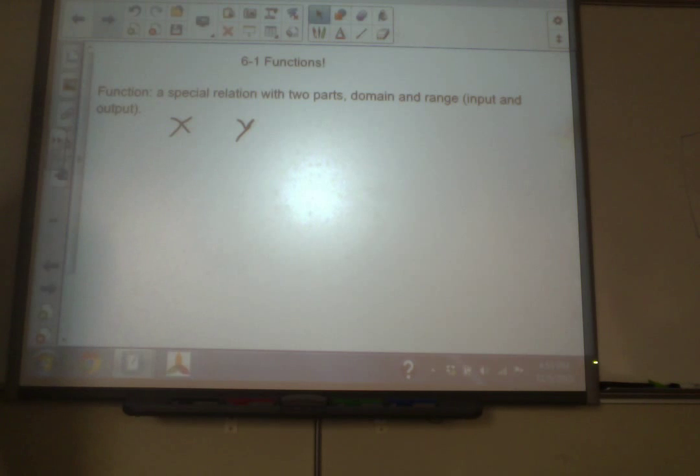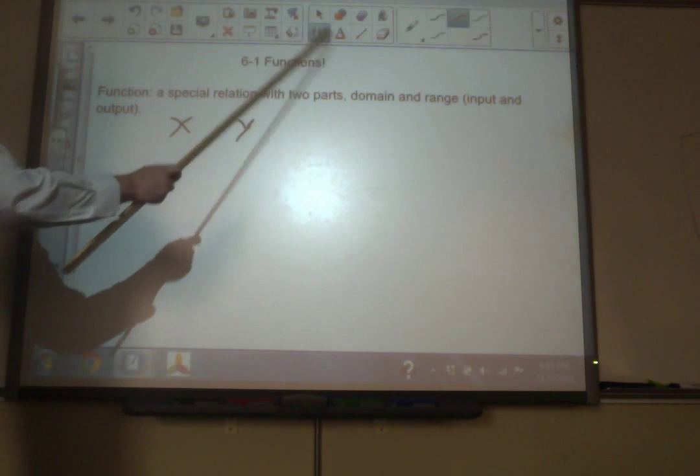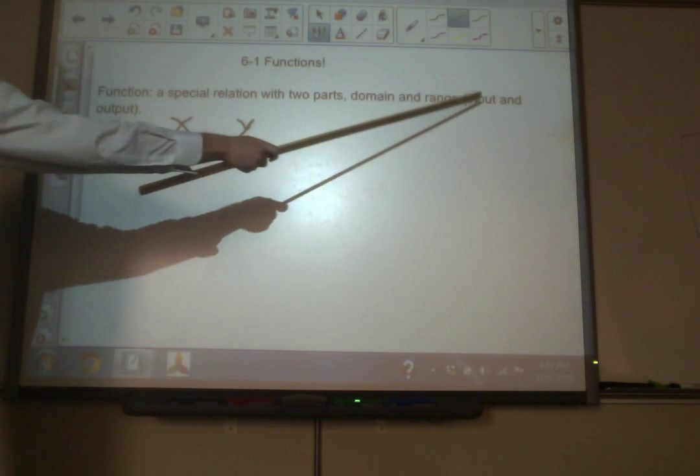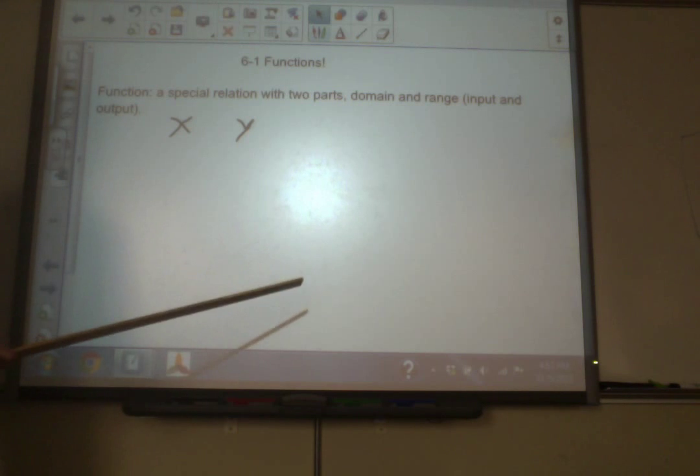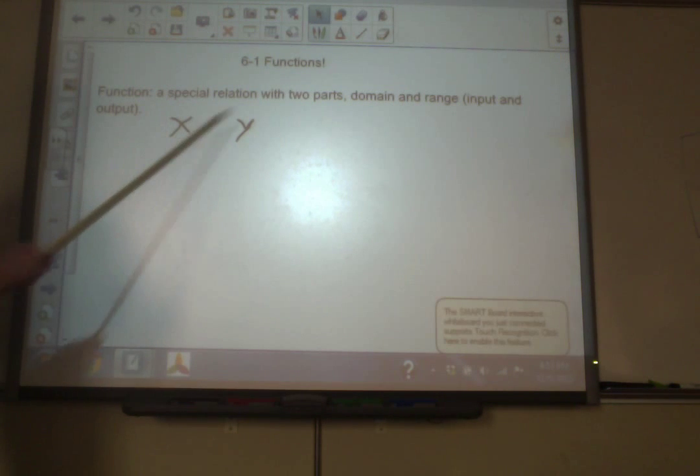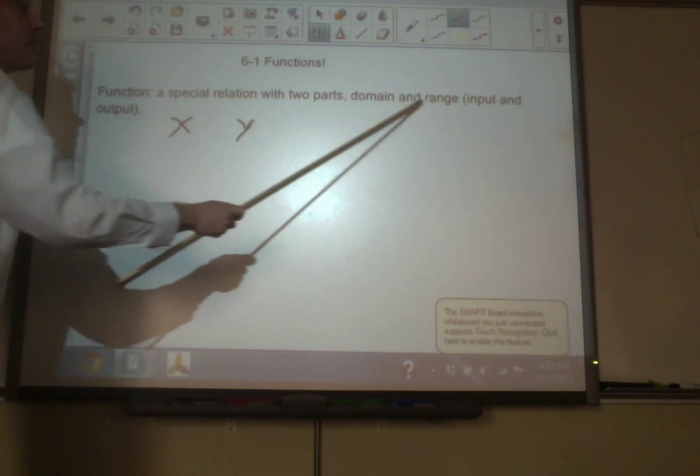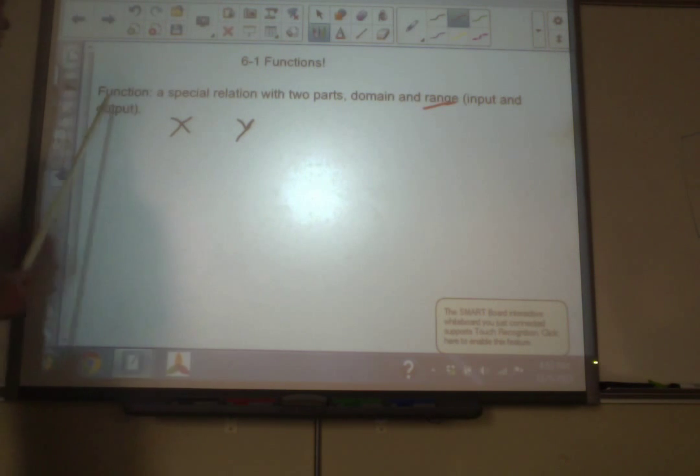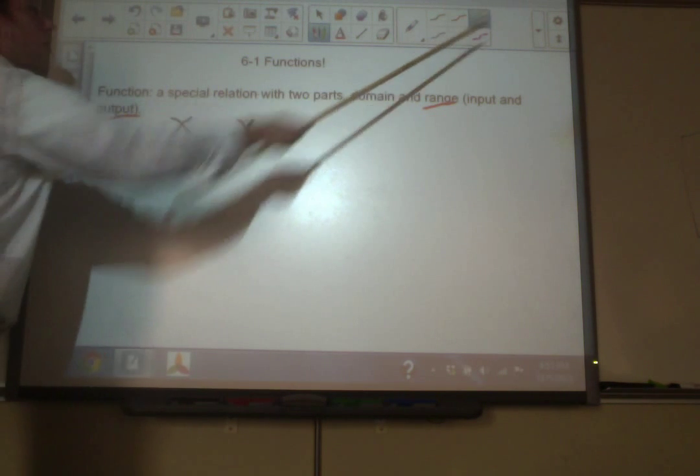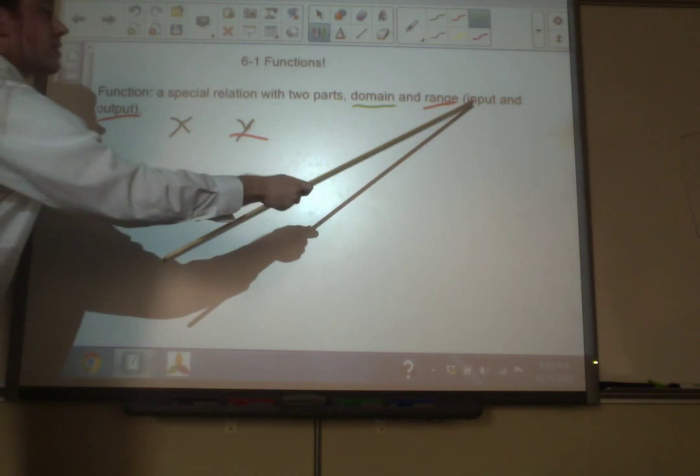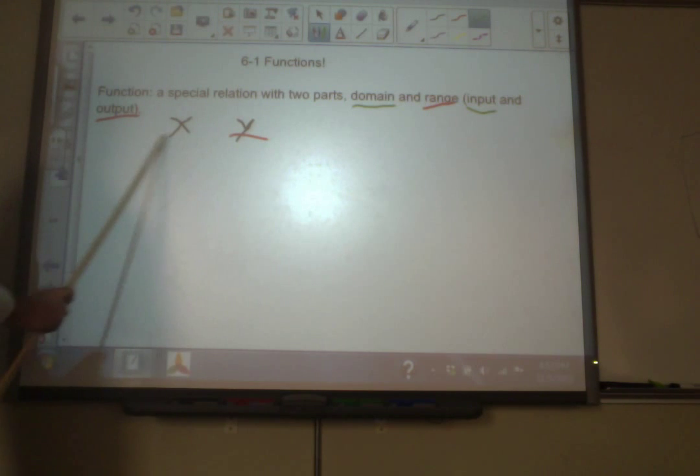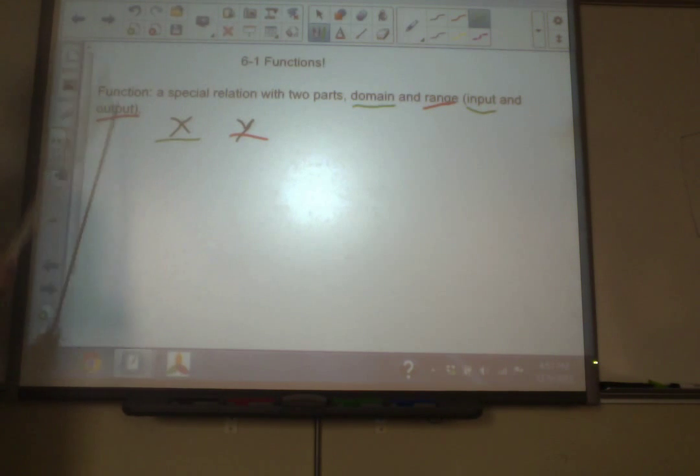A function is a special relation with two parts, a domain and a range. Now, there's a lot of different names that all mean the same thing. Domain can also be called the input, and it can also be called the x-coordinate. Range can also be called the output or the y. So, domain is the input and the x. Range is the output and the y.